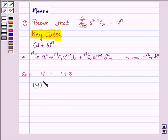4 to the power n is equal to 1 plus 3 whole to the power n. Now we expand this using this expansion. Here, a is 1 and b is 3. So,